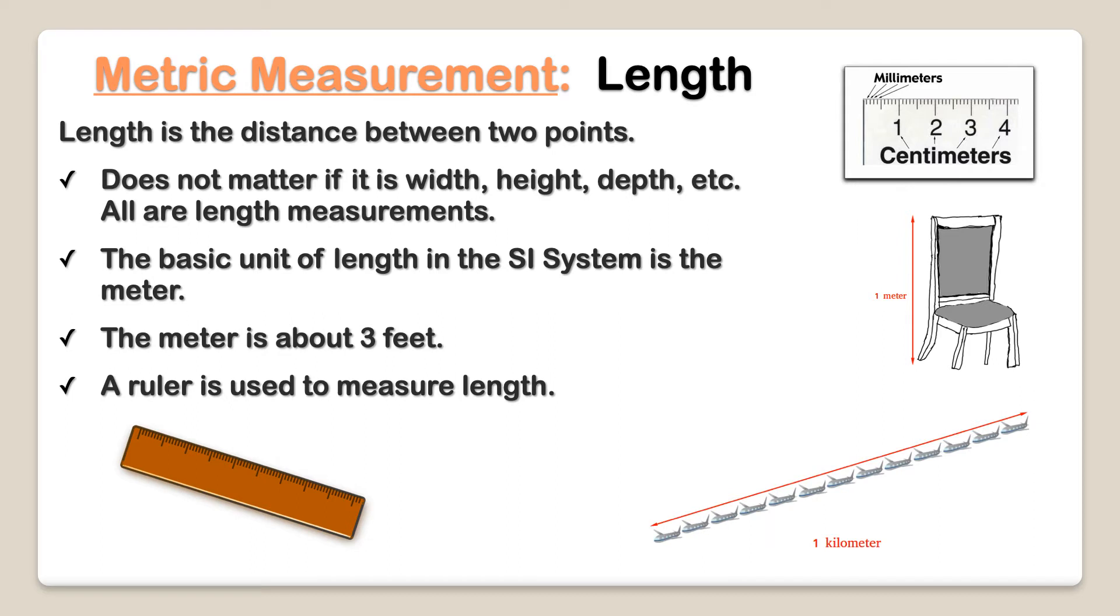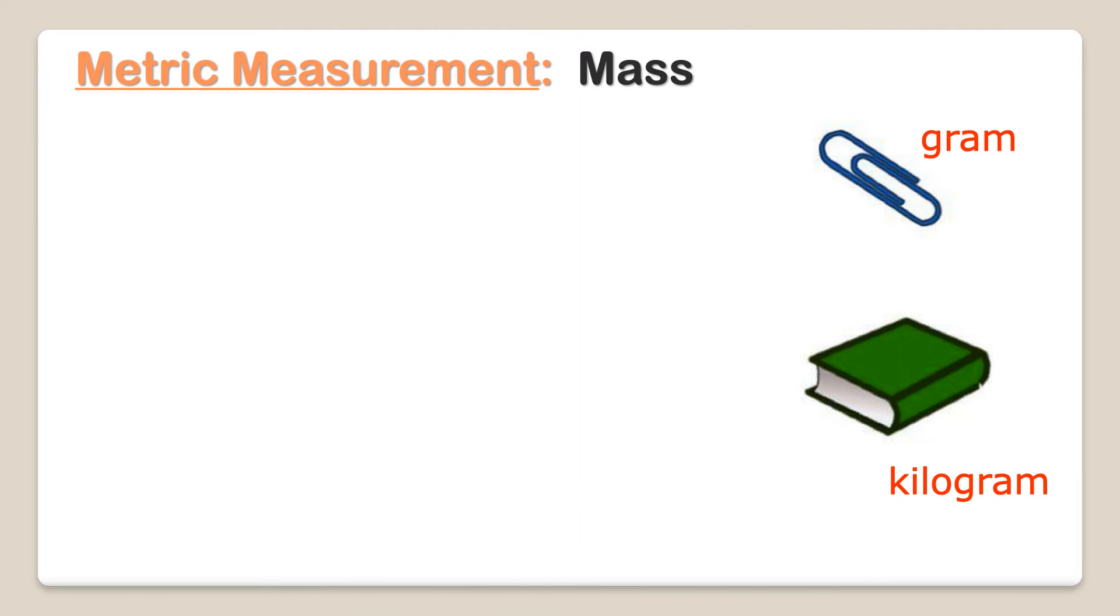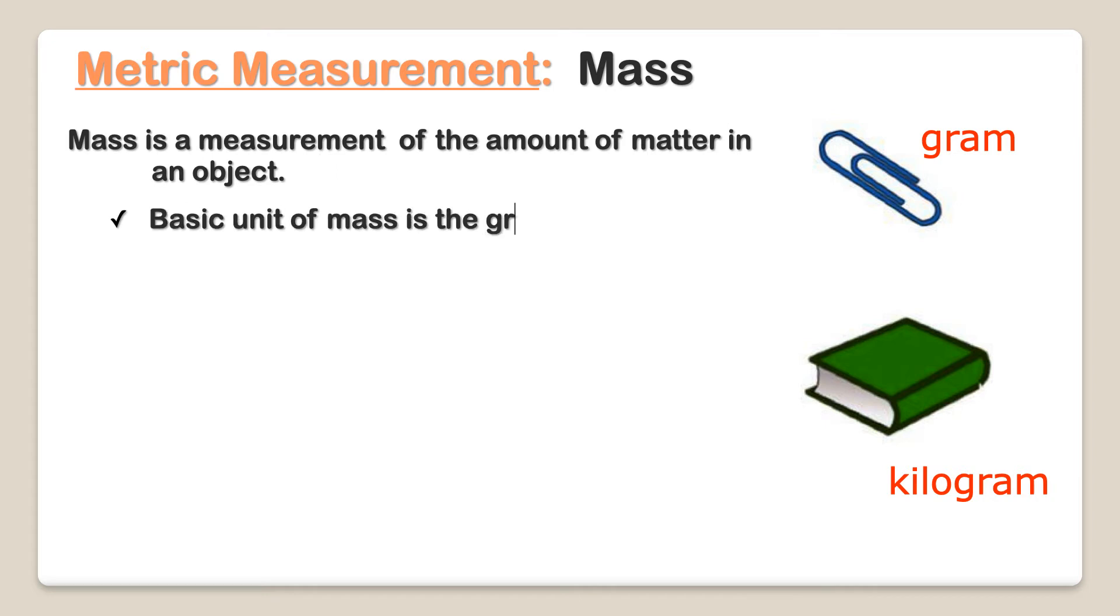Now let's look at mass. Mass is a measurement of the amount of matter in an object. The basic unit of mass is the gram. A scale is used to measure mass.